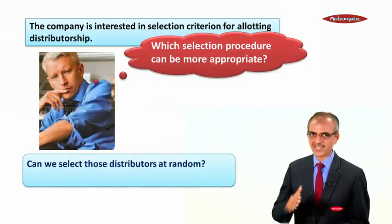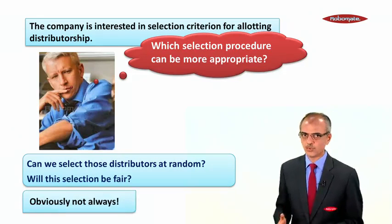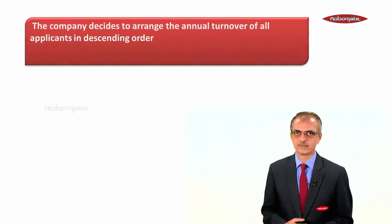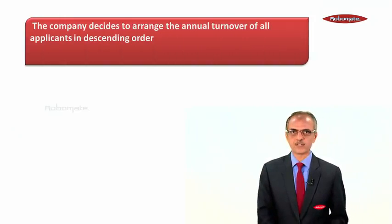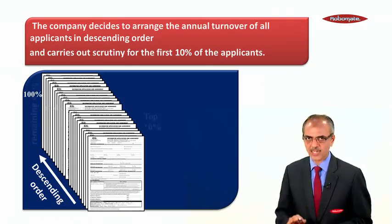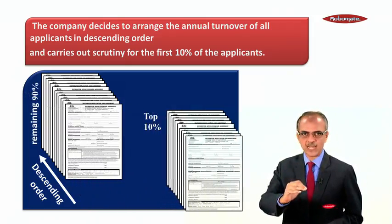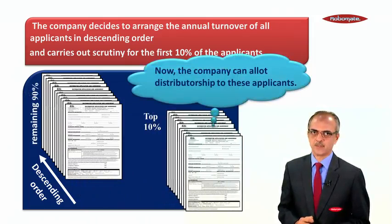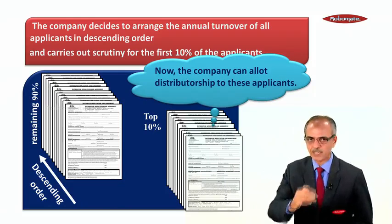Can we select those distributors at random? Of course, will the selection be fair? Not always. The company decides to arrange the annual turnover of all applicants in descending order and carry out scrutiny for the first 10% of the applicants. The company can allot distributorship to these applicants.